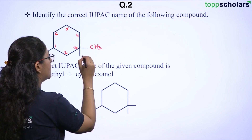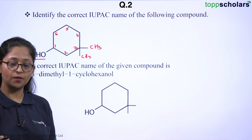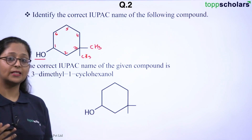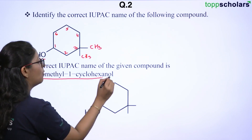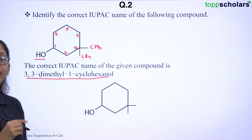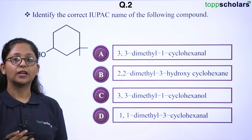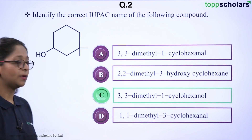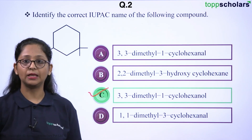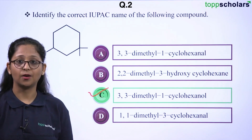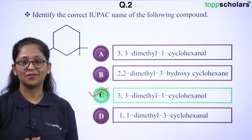We have CH₃, CH₃ at the third carbon position. So the name comes out to be 3,3-dimethyl-1-cyclohexanol. The correct answer is option C: 3,3-dimethyl-1-cyclohexanol is the IUPAC name for the given structure.